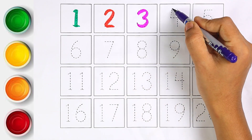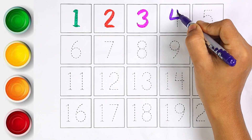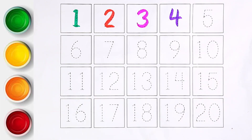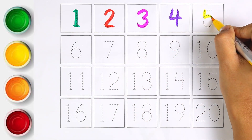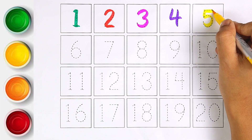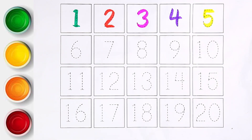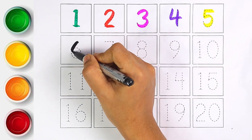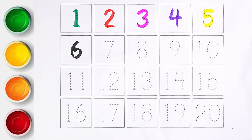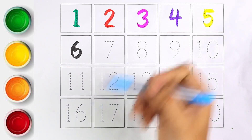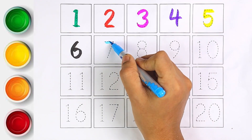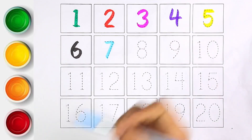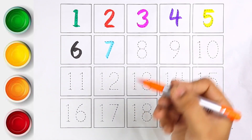Purple color — number four. Yellow color — number five. Next color is black — I am writing number six. Sky blue color — number seven.